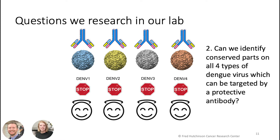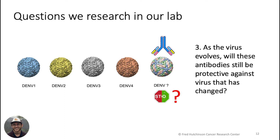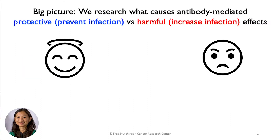We can use what scientists have learned about other viruses in order to inform our work. If you have more questions, Jay and I are working on this project. We'd also like to understand how a virus might evolve in response to evolutionary pressure from antibodies — Jackson is working to study as many mutations in the virus as possible to identify ways the virus can evolve to escape antibody response. To summarize, we research what causes antibody-mediated immunity and pathogenesis. This slide has a picture of Dr. Leslie Gu, who leads the lab.